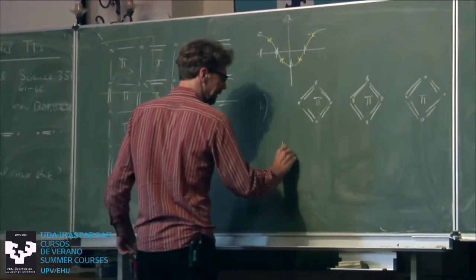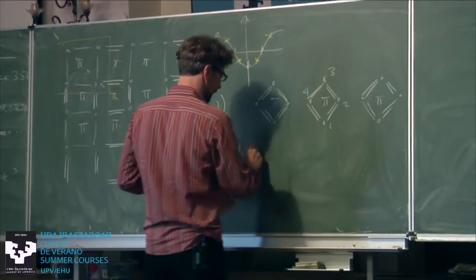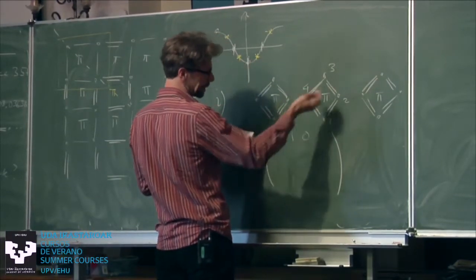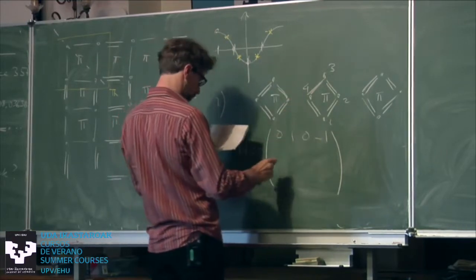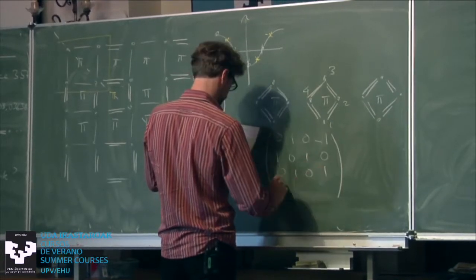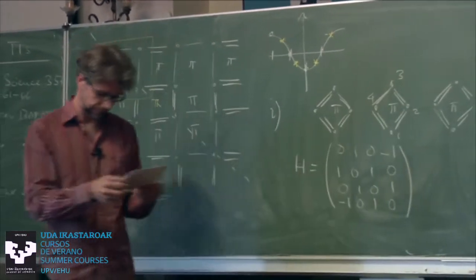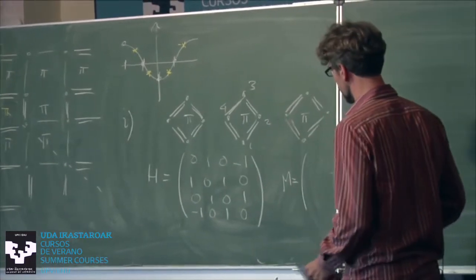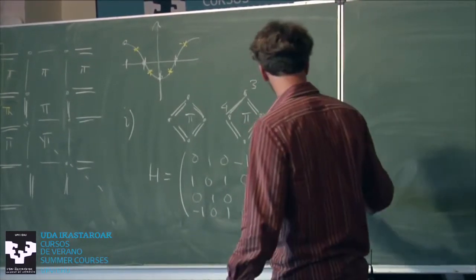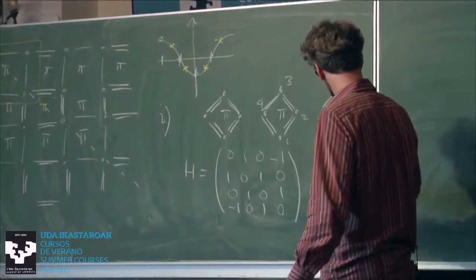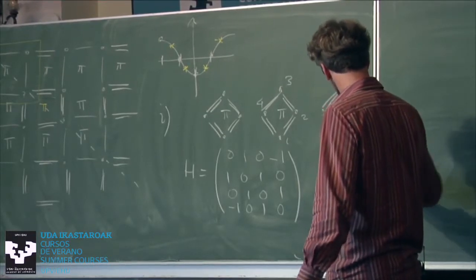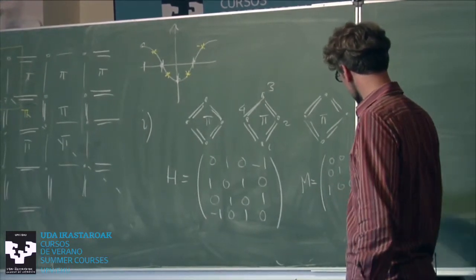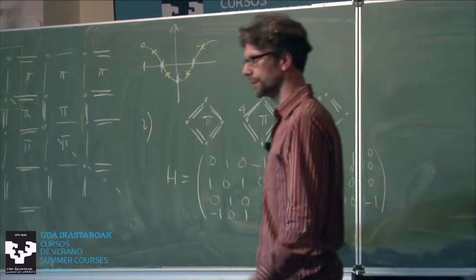The Hamiltonian for one π-flux plaquette — labeling the sites 1, 2, 3, 4 — involves hoppings from 1 to 2, 2 to 3, 3 to 4, and with a minus sign from 4 to 1 to implement the π-flux. The mirror symmetry exchanges sites 1 and 3 while site 2 remains fixed, and must be combined with a gauge transformation — handled by a minus sign on site 4 — to commute with this Hamiltonian.